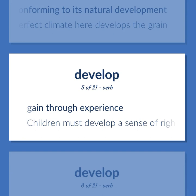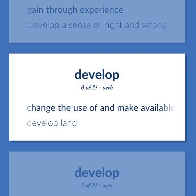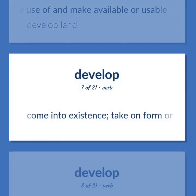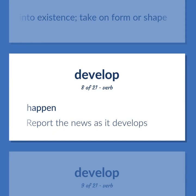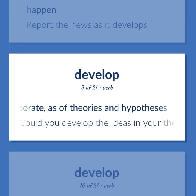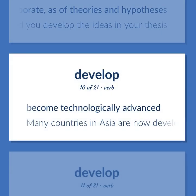Develop: Gain through experience — children must develop a sense of right and wrong. Change the use of and make available or usable — develop land. Come into existence, take on form or shape. Happen — report the news as it develops. Elaborate, as of theories and hypotheses — could you develop the ideas in your thesis?